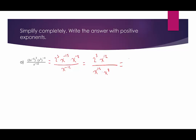In the numerator, the only thing I can do is 2 cubed, which is 2 times 2 times 2, which is 8. So it would be 8x to the 12th. Then in the denominator, this is same-base multiplication, so we'll add the exponents — that would be x to the 23rd.